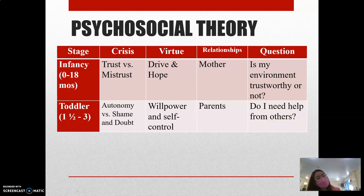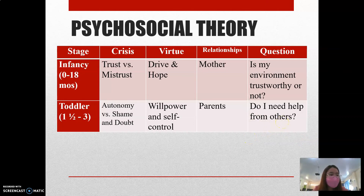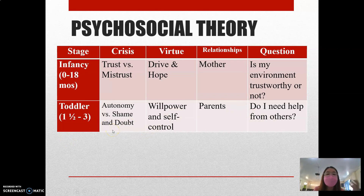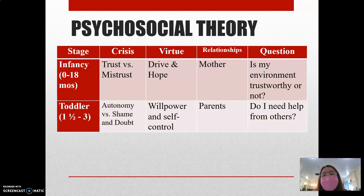If parents scold a child whenever the child tries to feed themselves, the child may develop shame and doubt because they received negative feedback. That is why it is very important to allow children from 1½ to 3 years old to do things they want to do, like playing outside, because this will allow them to develop willpower and self-control — resolving autonomy versus shame and doubt rather than developing shame and doubt.